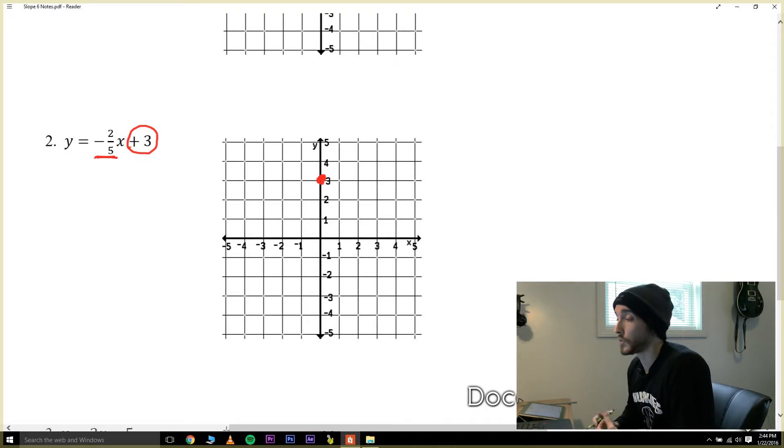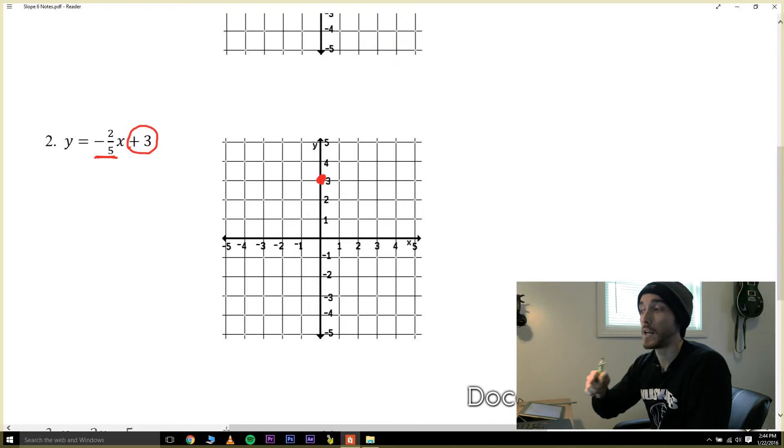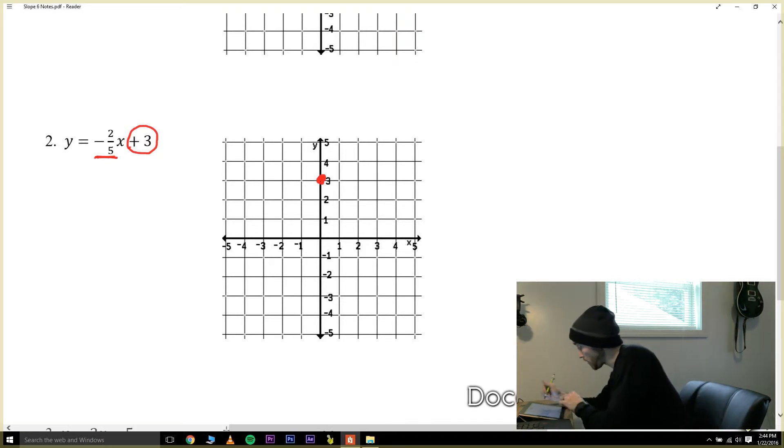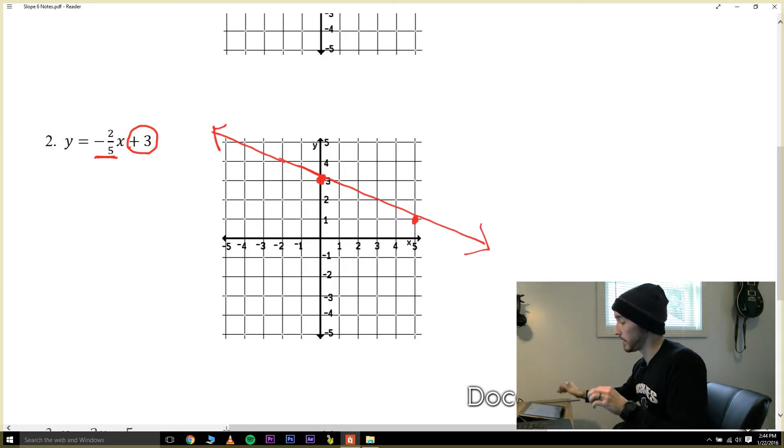From there all we have to do is follow a slope of negative two-fifths. Remember that negative slopes go downhill so we're gonna count from that point down two and right five. Now all I have to do is draw my line going through both points. Remember I want to draw this line pretty much as big as we can to show that it goes forever and ever. Now keep in mind this is a common sense check: it's a negative slope, it's going downhill.